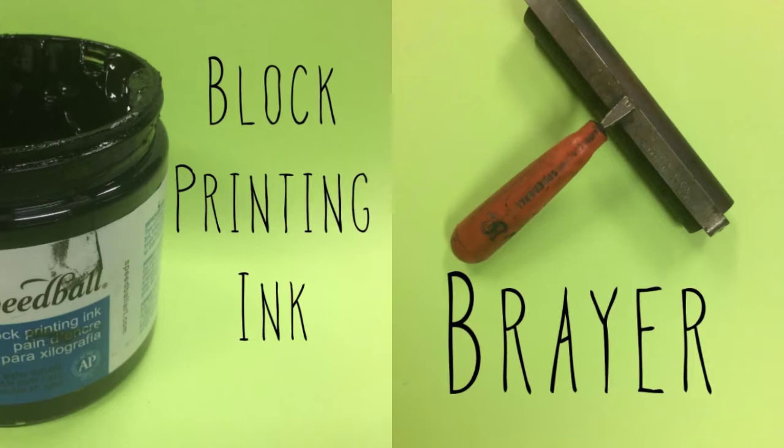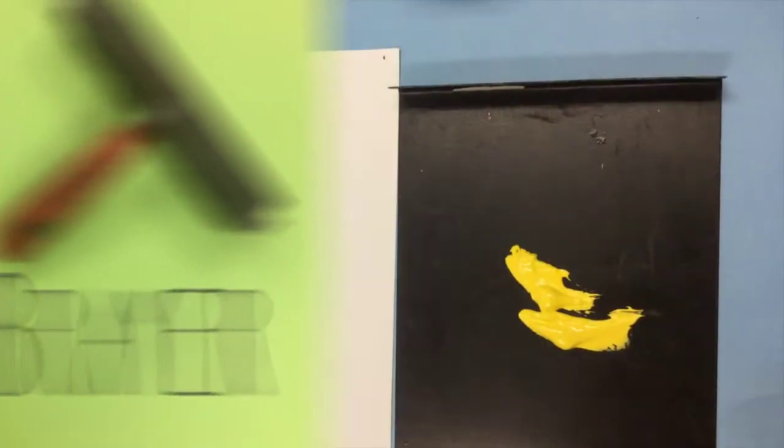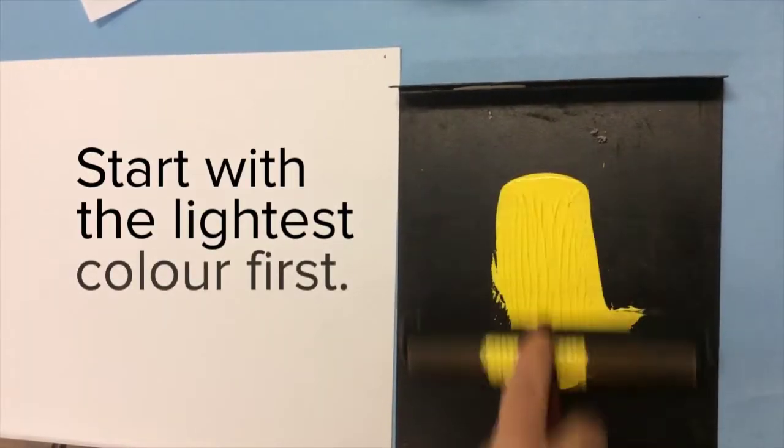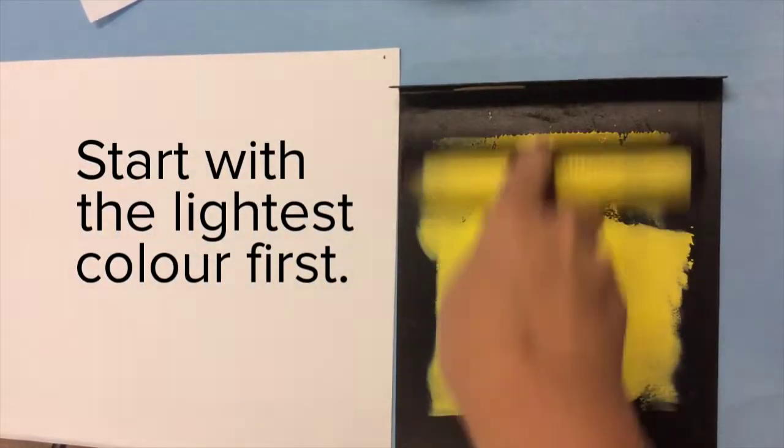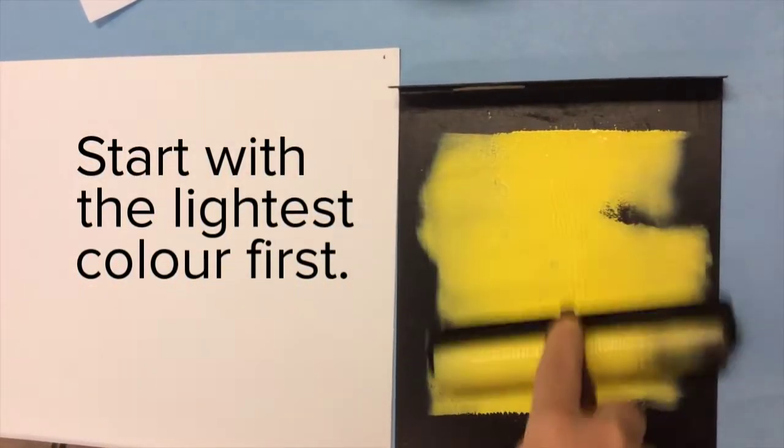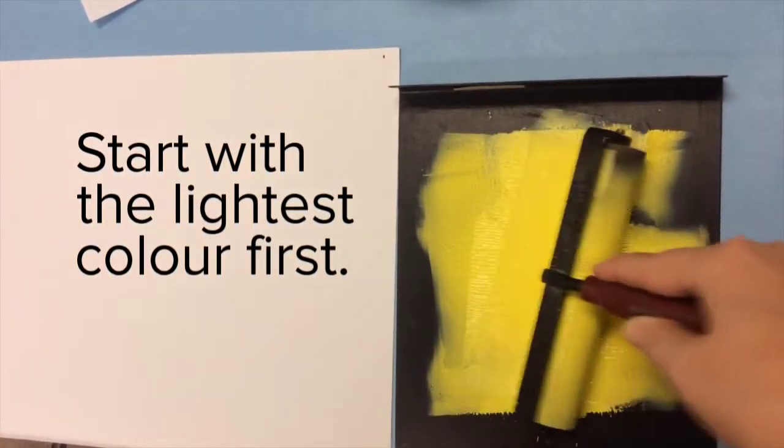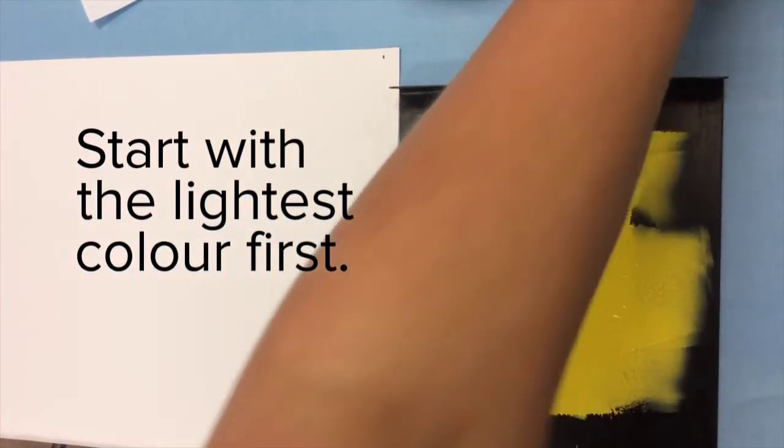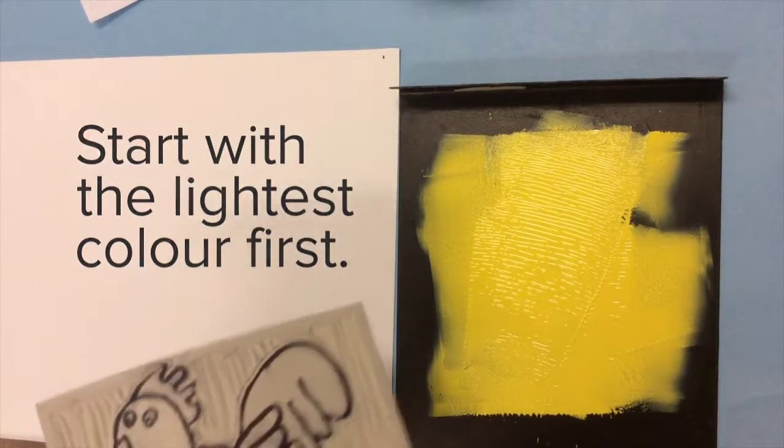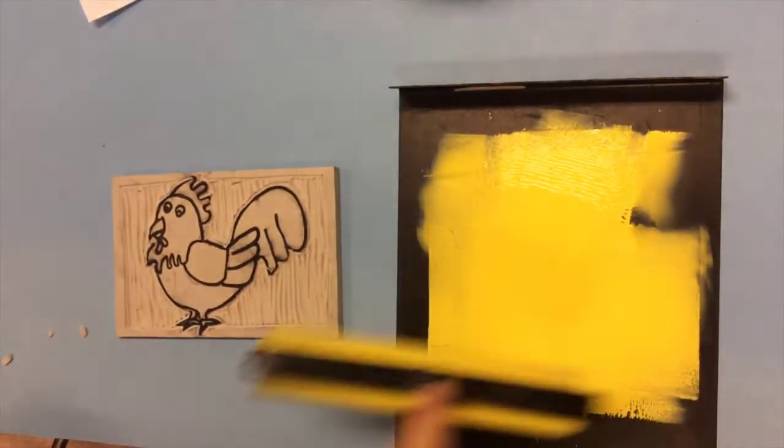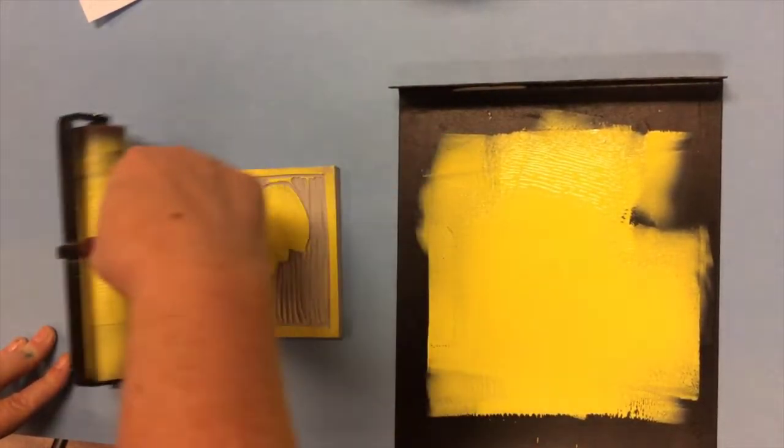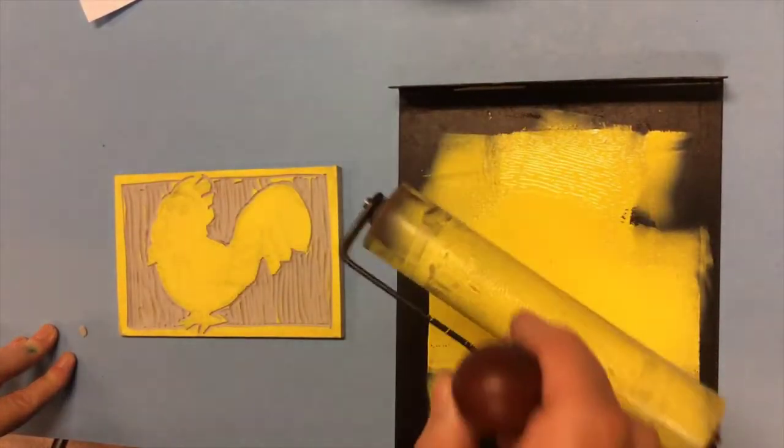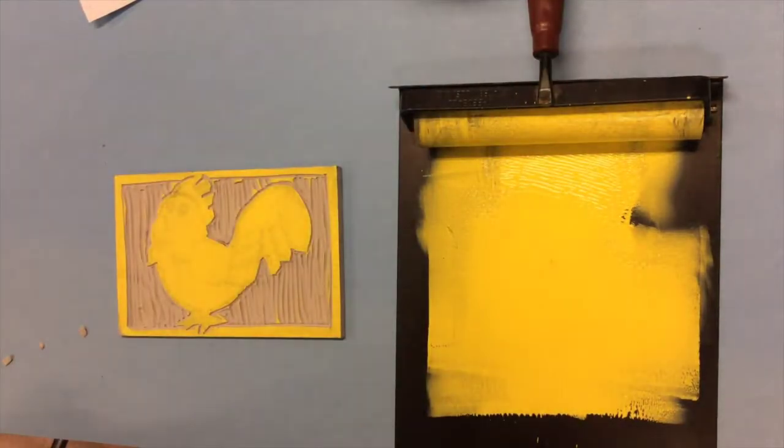Okay we're almost ready to print. All we need now is our ink and a brayer. You always want to start with the lightest color first. And you want to roll the ink until it's evenly distributed across the whole brayer. And then here comes the part that I think is the most fun. Okay now you're going to take your brayer and roll the ink across your printing block. Be sure to get all the corners and the edges. You want to make sure the ink is distributed evenly.